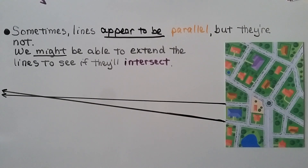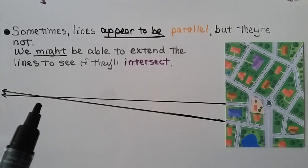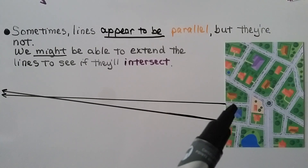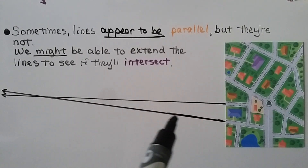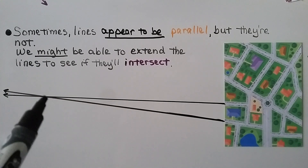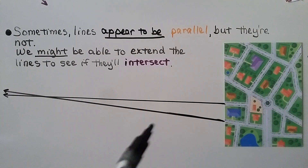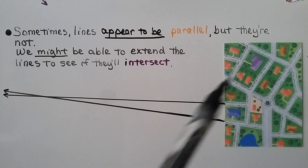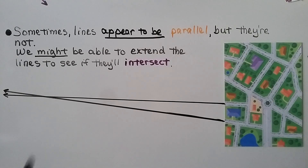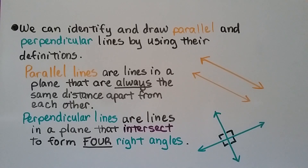Sometimes lines appear to be parallel but they're not. We might be able to extend the lines to see if they'll intersect — then we know they're not parallel, because parallel lines never meet. Here we have two streets that almost look parallel, but one is slightly slanted. If we extended the lines far out, we could see they would eventually cross, so these two streets are not parallel. We have to be careful, and sometimes we don't have enough room on paper to make lines long enough to tell.